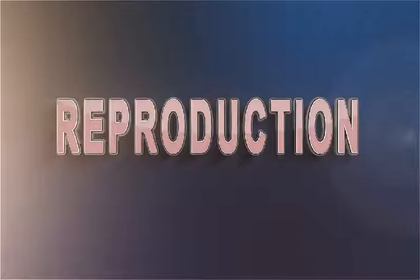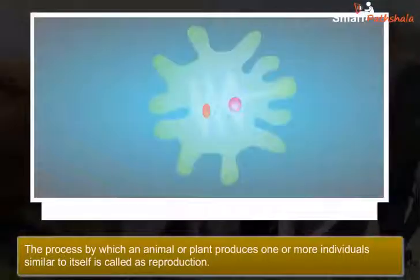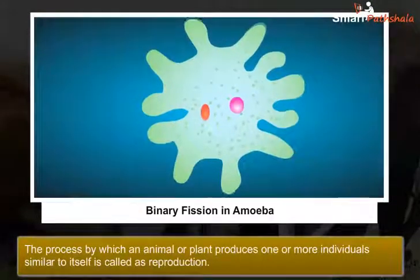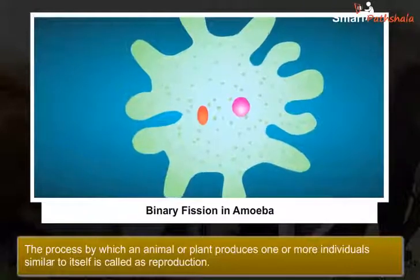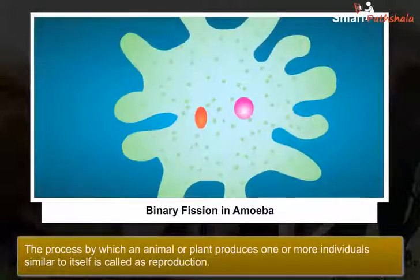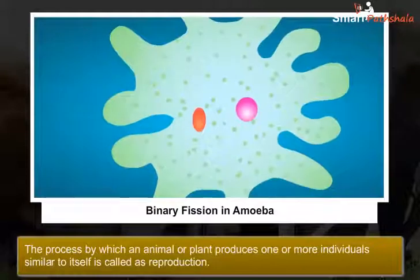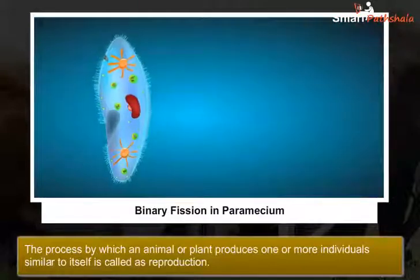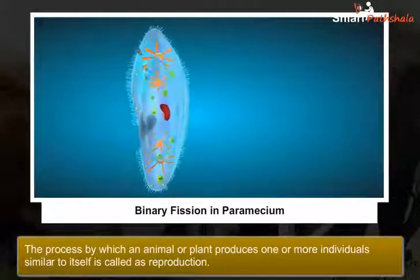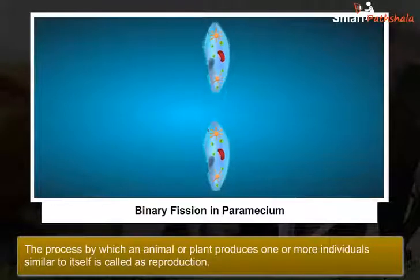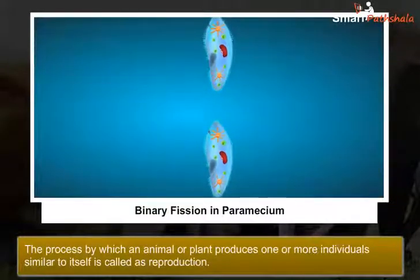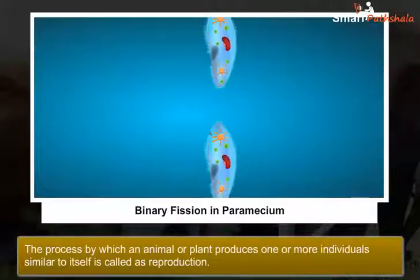We have all learnt about the various processes like digestion, excretion, respiration and circulation in our earlier classes. These processes are essential for the survival of every animal. Now let us question ourselves about how an animal can continue its species on the earth. The answer to this question is through reproduction.